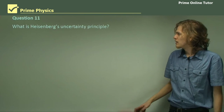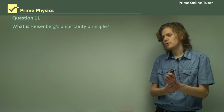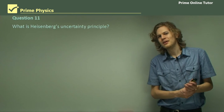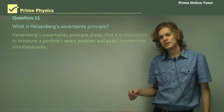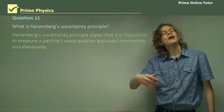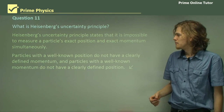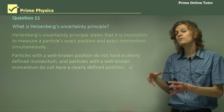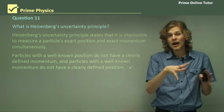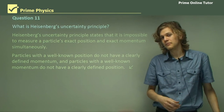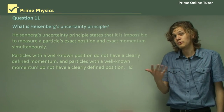Question 11: What is Heisenberg's uncertainty principle? Heisenberg's uncertainty principle states that it is impossible to measure a particle's exact position and its exact momentum at the same time. Particles with a well-known position don't have a clearly defined momentum. Particles with a clearly defined momentum don't have a position. It's one of the strangest things about quantum mechanics, but as far as we can tell, it works.